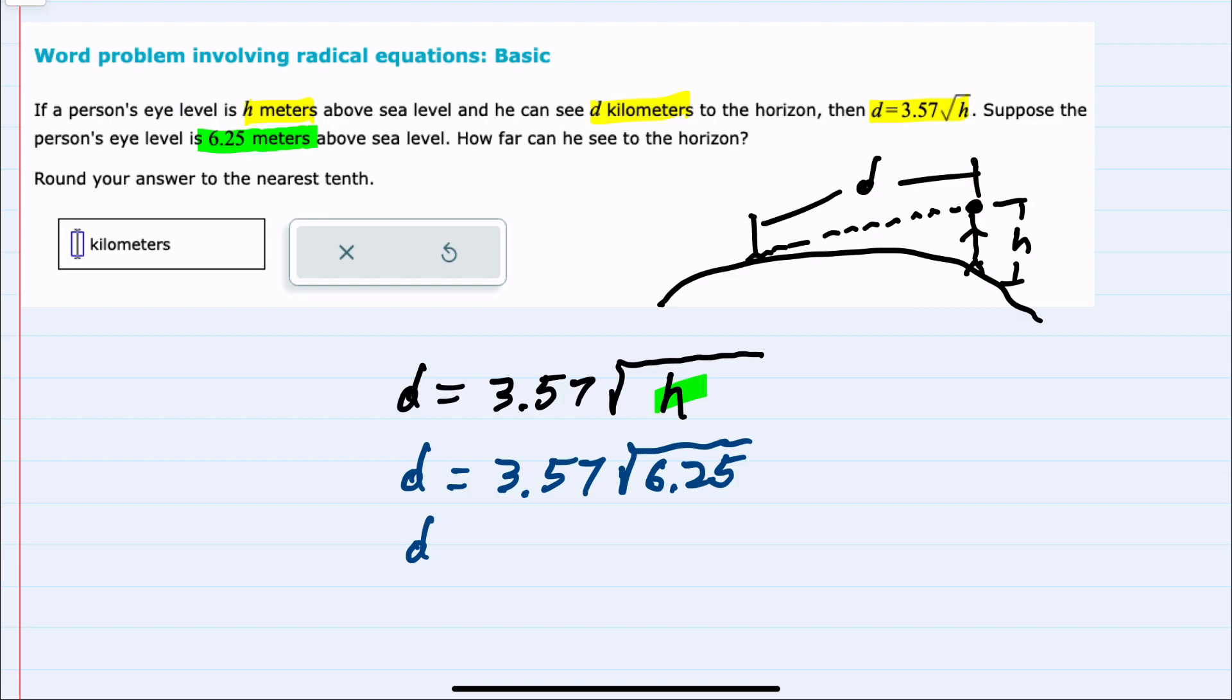Here we can use a calculator. We know we're going to round to the nearest tenth. So first, in a basic calculator, I would want to make sure that we do the square root first. And here, the square root of 6.25 works out perfectly to just 2.5.